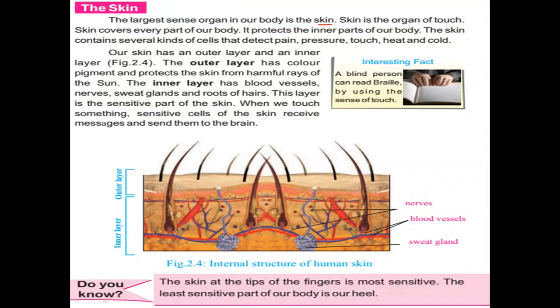Skin covers every part of our body. Its main important function is the protection of inner parts. Just think — if we didn't have skin, our muscles would be exposed, they could get infection and would not be protected from injury. It is a blessing of Allah that we have this covering on our body to protect every part of it. The skin contains several kinds of cells that detect pain, pressure, touch, heat, and cold.